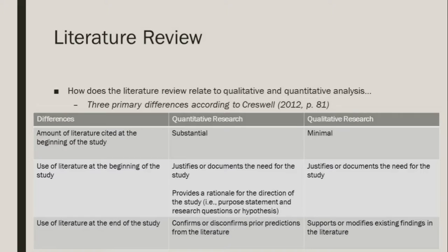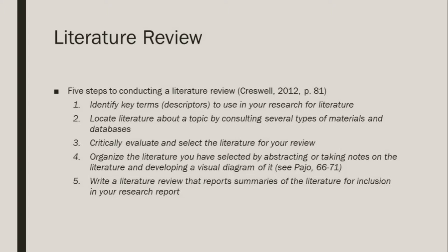As a researcher myself, I tend to take everything and list it out into steps as part of my process, and I have done that for you in this presentation. This slide briefly discusses those steps, and then subsequently we discuss them in greater detail. Step 1: Identify key terms or descriptors to use in your research. Step 2: Locate literature about a topic by consulting several types of materials and databases. Step 3: Critically evaluate and select the literature for your review. Step 4: Organize the literature you have selected by abstracting or taking notes and developing a visual diagram of it. Step 5: Write a literature review that reports summaries of the literature for inclusion in your research report.